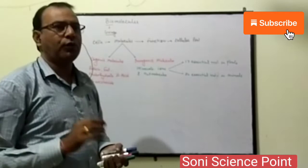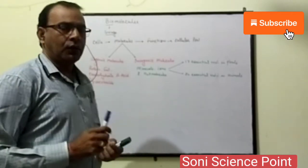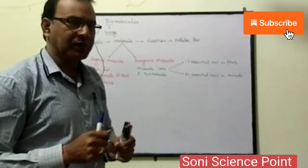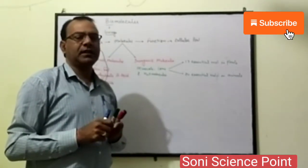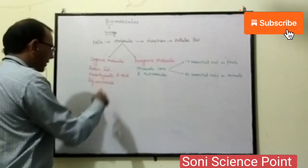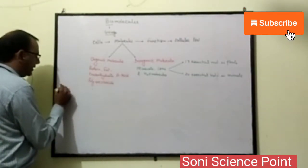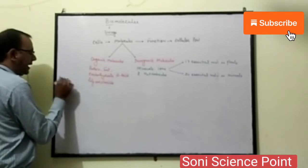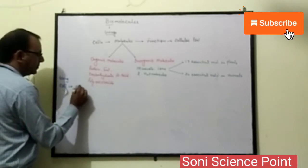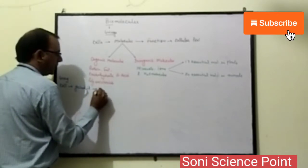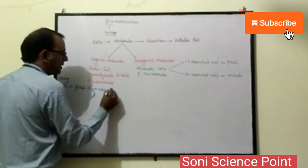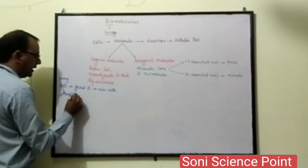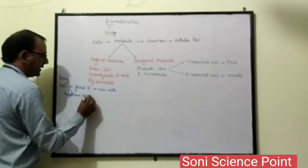How can we detect the presence of molecules in a cell? First, we take a living cell, grind it, and mix it with trichloroacetic acid. To do this, take the living cell, grind it, and mix it with trichloroacetic acid.